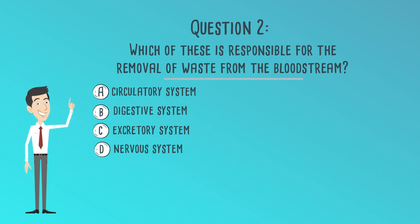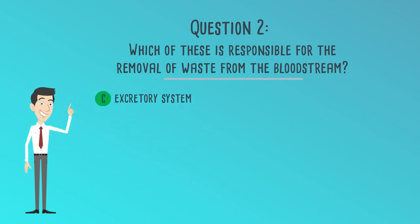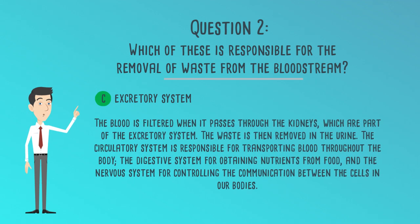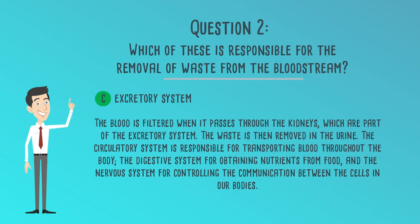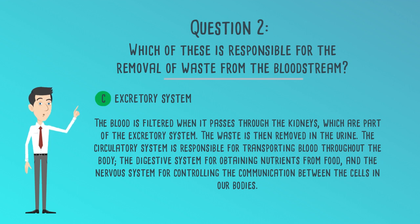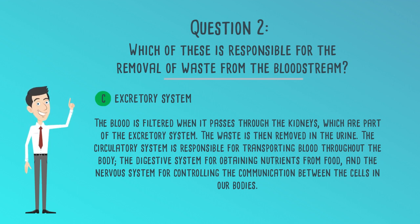C. Excretory system is the correct answer. The blood is filtered when it passes through the kidneys, which are part of the excretory system. The waste is then removed in the urine. The circulatory system is responsible for transporting blood throughout the body, the digestive system for obtaining nutrients from food, and the nervous system for controlling communication between the cells in our bodies.